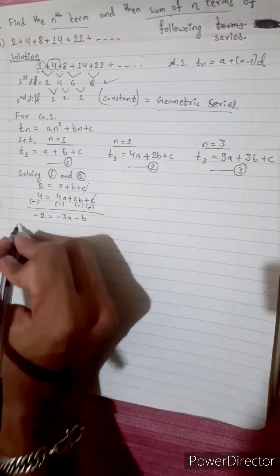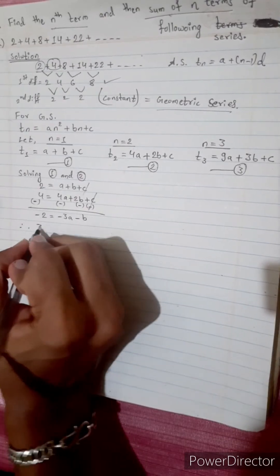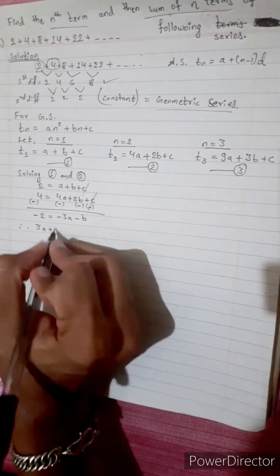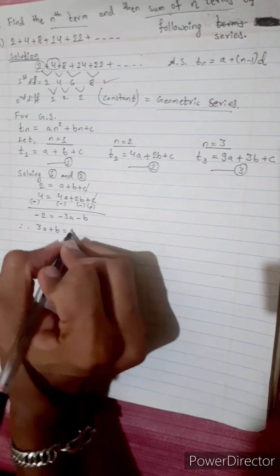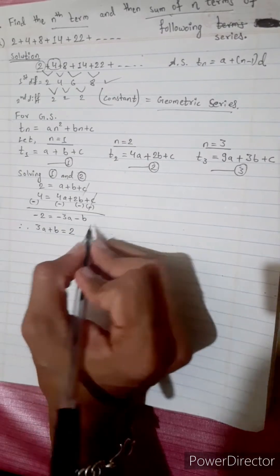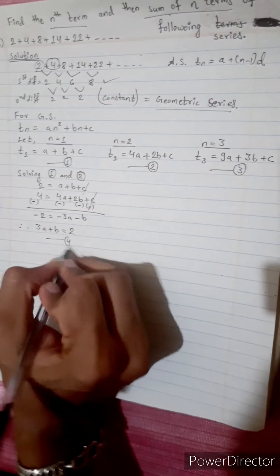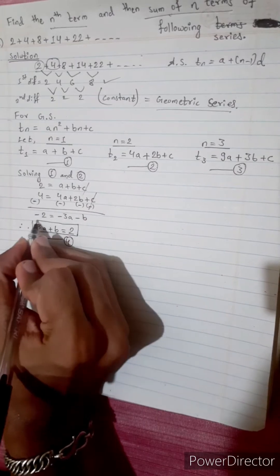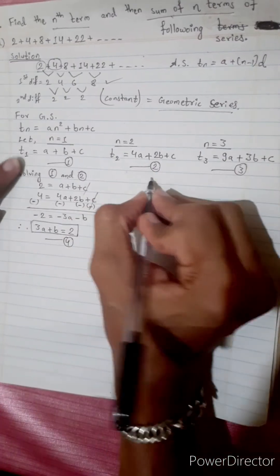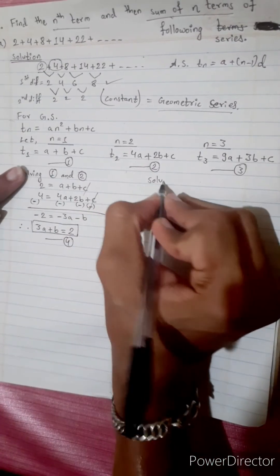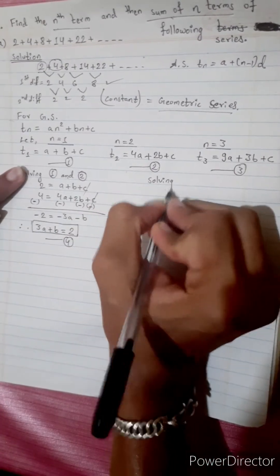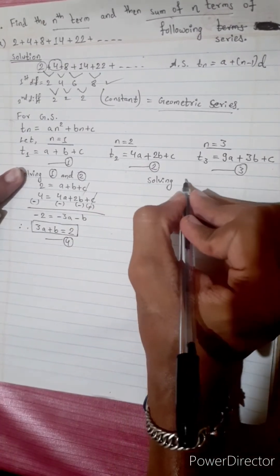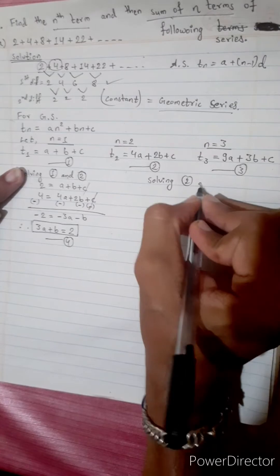Therefore, 3a plus b equals 2. This is Equation 4. Now, here we are solving Equation 2 and Equation 3.